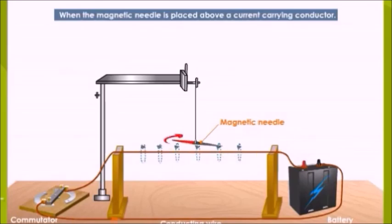This experiment indicated that the direction of the magnetic field above and below the wire is in opposite directions.